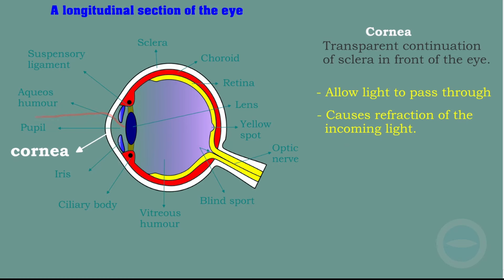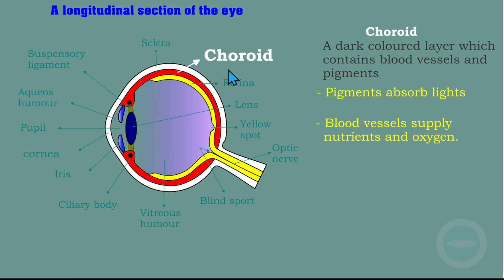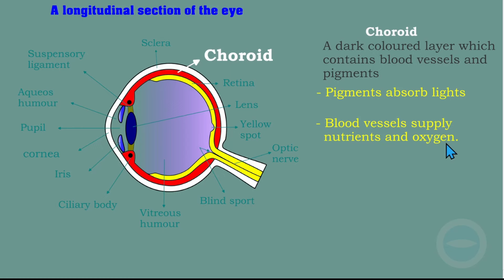The next part is the choroid. The choroid is a dark-coloured layer which contains blood vessels and pigment. This red layer here is called the choroid. The functions of the choroid: the pigments absorb the light, and the blood vessels supply nutrients and oxygen to the eye.